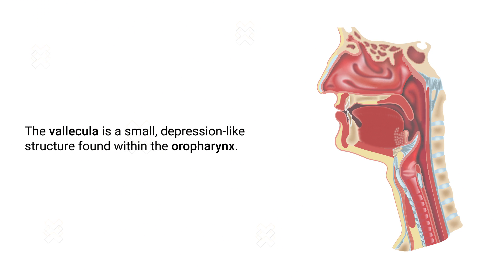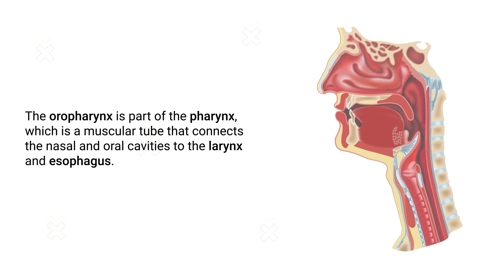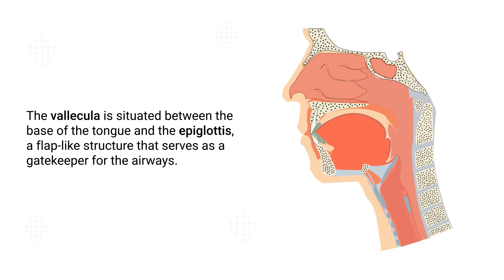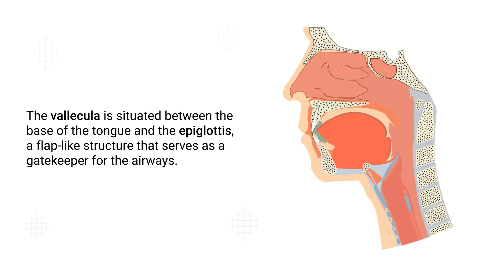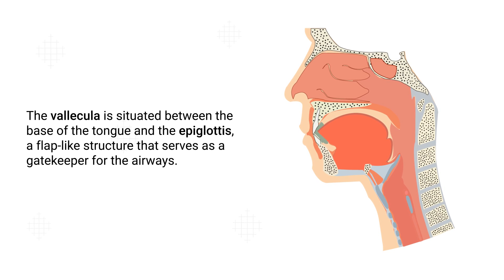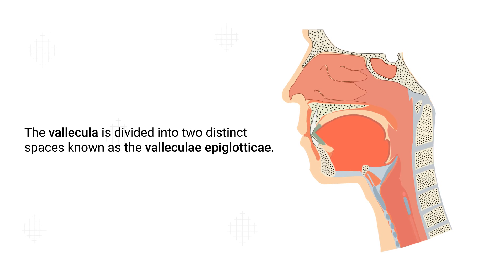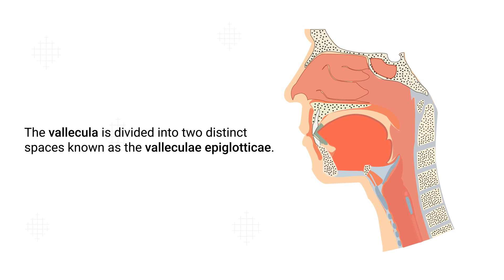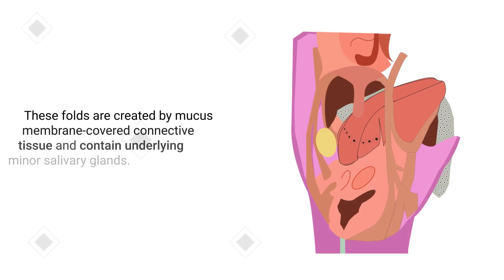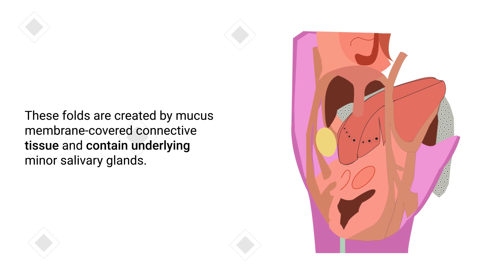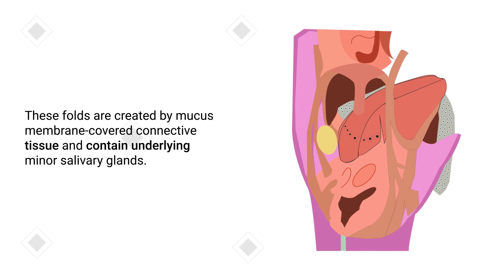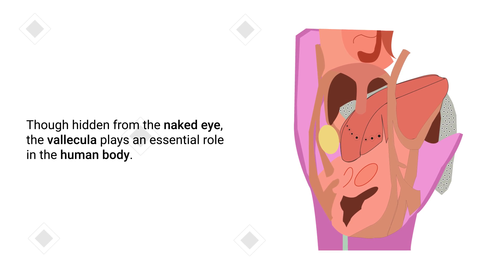The vallecula is a small depression-like structure found within the oral pharynx. The oral pharynx is part of the pharynx, a muscular tube that connects the nasal and oral cavities to the larynx and esophagus. More specifically, the vallecula is situated between the base of the tongue and the epiglottis, a flap-like structure that serves as a gatekeeper for the airways. The vallecula is divided into two distinct spaces known as the vallecula epiglotticae, folds created by mucous membrane covered connective tissue containing underlying minor salivary glands.